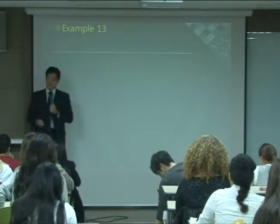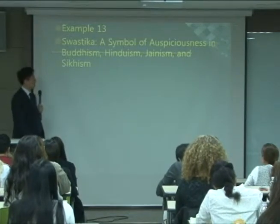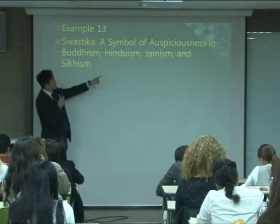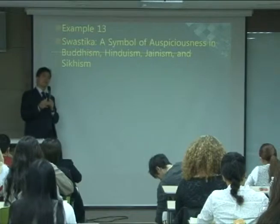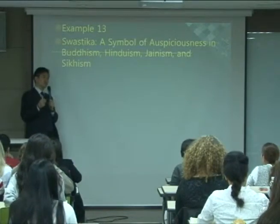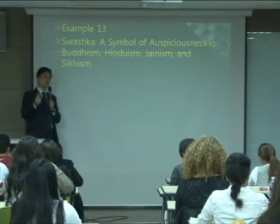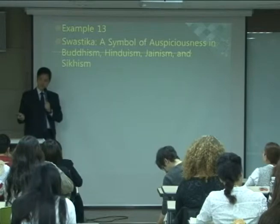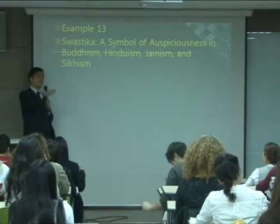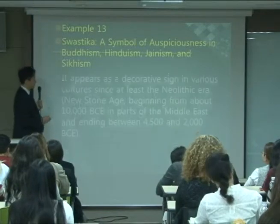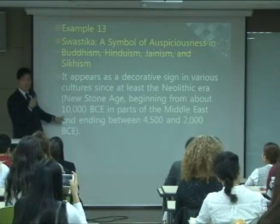Example 13 is the swastika. It's a symbol of auspiciousness in Buddhism, Hinduism, Jainism, and even Sikhism. In present time we associate this symbol with two things: Buddhism and Nazism. But it has a long history and you find this symbol in many different cultures, as far back as the Neolithic era — in use since about 10,000 BCE.